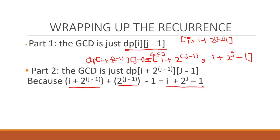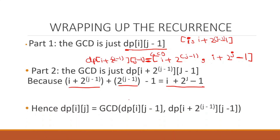You should pause the video and verify this by hand to get a good understanding of why we split the range into these two parts. The answer dp[i][j] is just GCD(dp[i][j-1], dp[i + 2^(j-1)][j-1]). This is the most complicated part of the recurrence, and if you get this then you have understood the whole concept of sparse table.